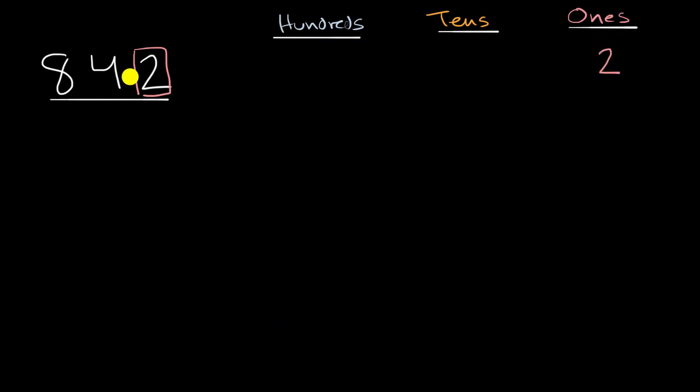And then we go to the next place value. We go one place to the left. We go to the tens place. This tells us how many tens we are dealing with. And this is four tens. So we'd write that like that. And then last but not least, if we go one more place to the left, this is the hundreds place. And so we have eight hundreds.